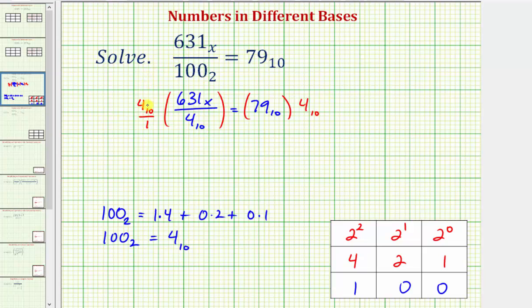So notice on the left side, 4 divided by 4 or 4 base 10 divided by 4 base 10 would be equal to 1. So now we have 631 base x on the left. On the right we have 79 base 10 times 4 base 10, or we normally just say 79 times 4 which is equal to 316. So the right side is now 316 base 10.